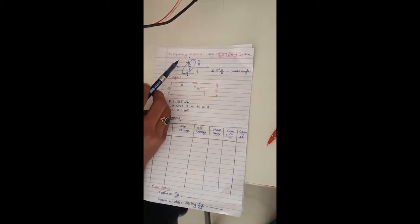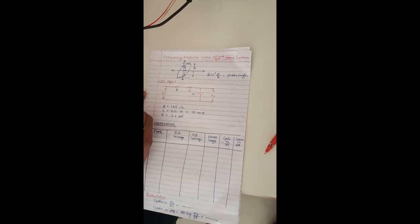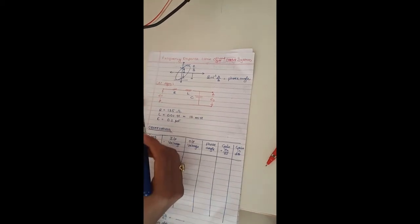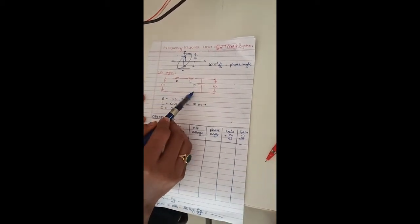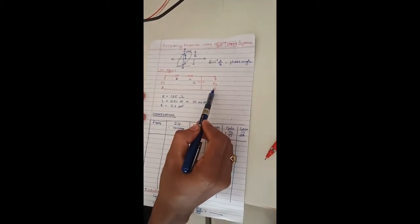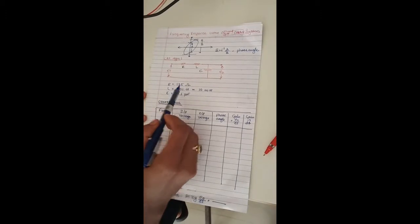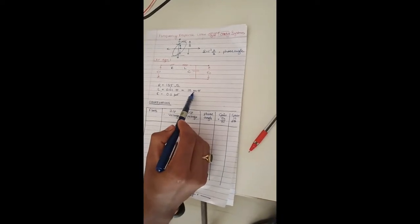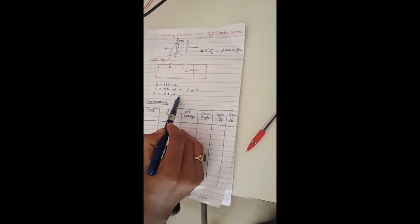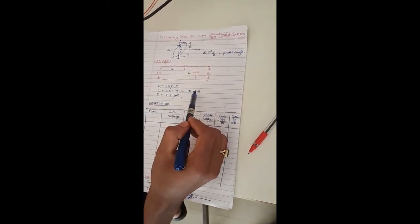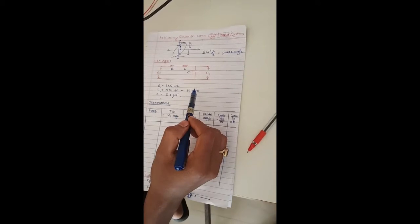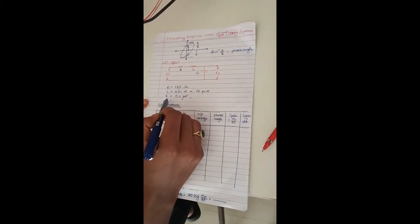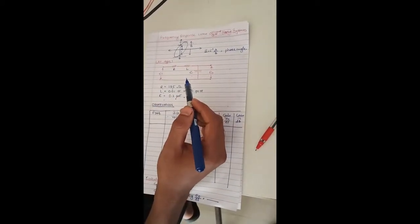Today we are going to study the frequency response curve of a second order system. To study the frequency response of a second order system, we have selected the basic RLC circuit. The R value is 135 ohm, L value is 10 mH, and C value is 0.1 microfarad. These RLC values are not fixed; they depend on the transfer function for which we are finding the frequency response.